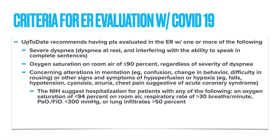Patient signs and symptoms that warrant an ER evaluation include dyspnea at rest, a pulse ox of 90% or less, or other signs of hypoxia — for example, altered mental status, hypotension, cyanosis, or chest pain. I'll be honest, I read this and thought that 90% seems a little low, but it's interesting to note that the NIH suggests a hospital evaluation for those patients with a pulse ox less than 94%. So this is a great example of a time where you'll have to use your clinical judgment and reasoning to determine what cutoff is appropriate for your specific patient.